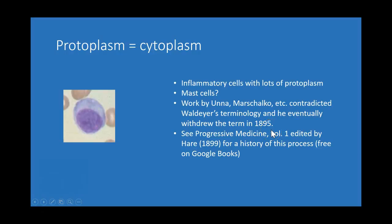So finally, Waldeyer actually revoked the term 'plasma cell' in 1895, saying it shouldn't be used anymore because other people had applied it to different things. You can see a really interesting history of this in a Progressive Medicine text available on Google Books for free. Although what he originally saw was not a plasma cell as we now define it, he was the first to coin the term, and eventually that name became associated with what we now know as plasma cells — immunoglobulin-producing cells. I hope that clears up the question!